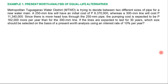For our first example in present worth analysis, the MTWD will be deciding whether to use a 250 mm diameter pipe or a 300 mm diameter pipe. These are the two alternatives. Both have different costs. The discount rate is 10% per year and the project will last for 30 years — this is the lifespan of the project.